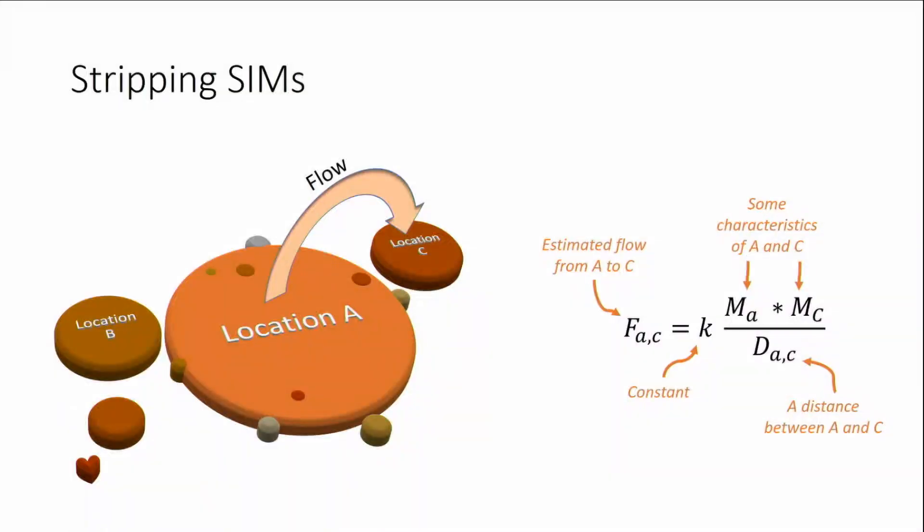So I'm Martin Vanhoef. I'm going to talk a bit about spatial interaction models. There's a whole family of these models out there, but basically if you reduce them to their essence, they're about predicting flows or interactions between different areas based on the characteristics of these areas and some distance measure.